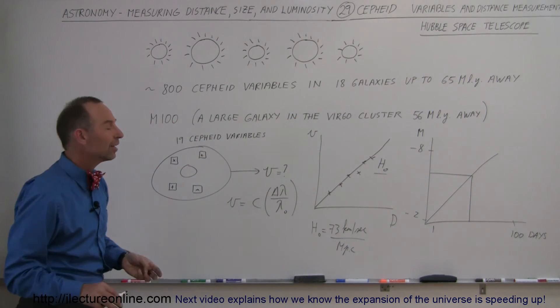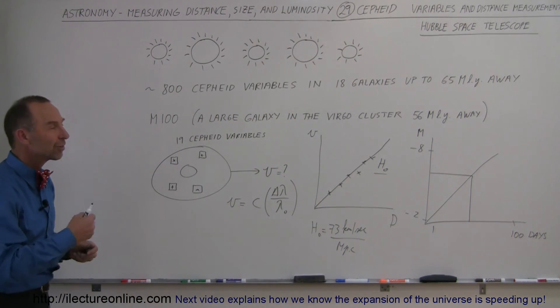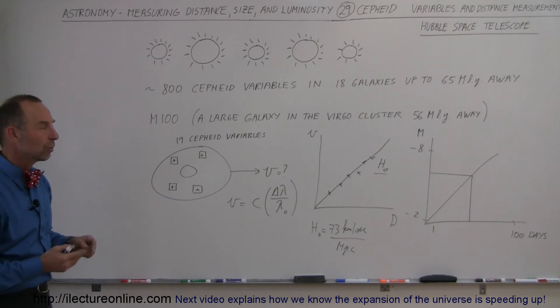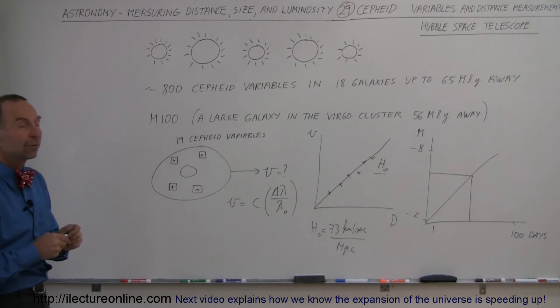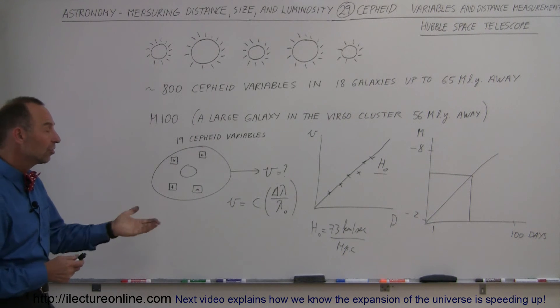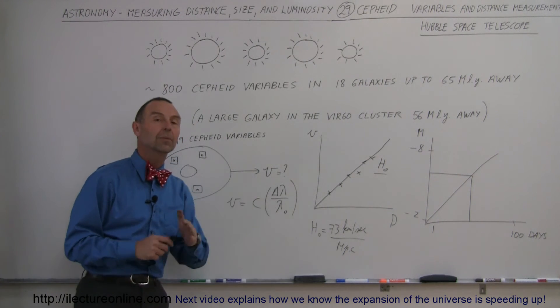That took a while because the early readings gave us a very different value. But over time, as we get more and more accurate measurements and put all the data together, the value started merging down to 73 kilometers per second per megaparsec, which is now one of the premier values for the Hubble constant.